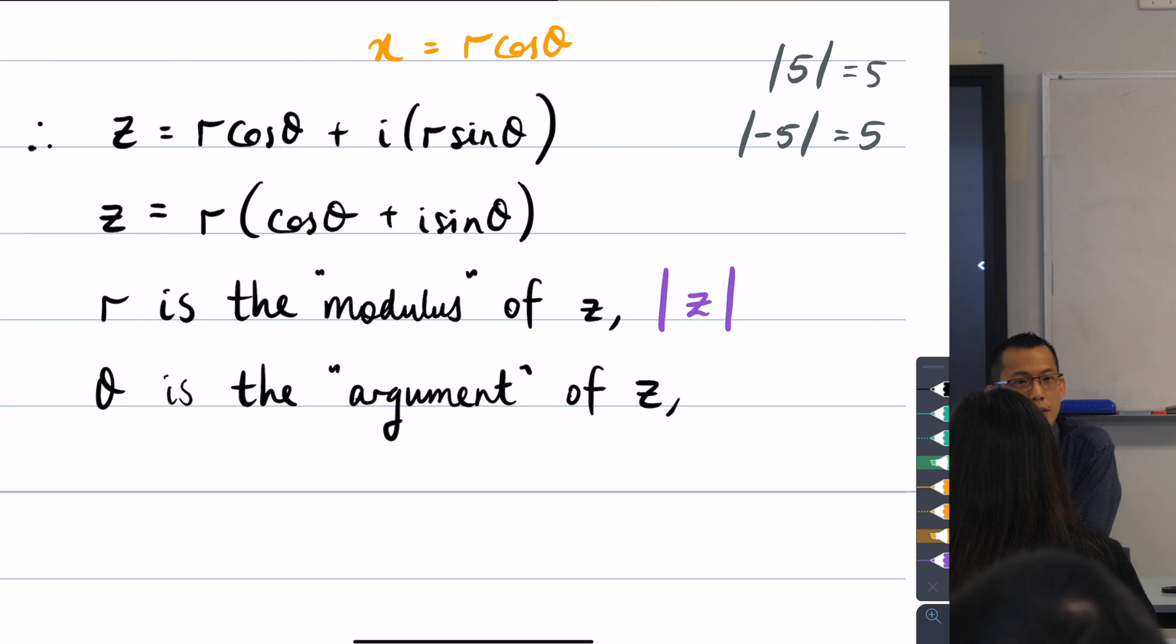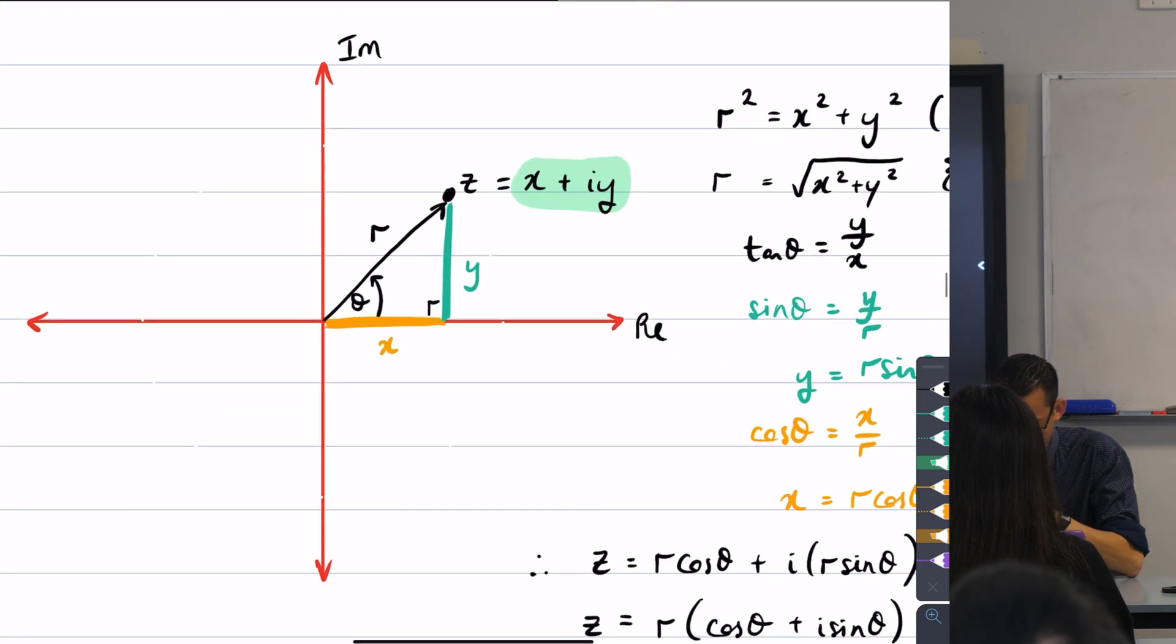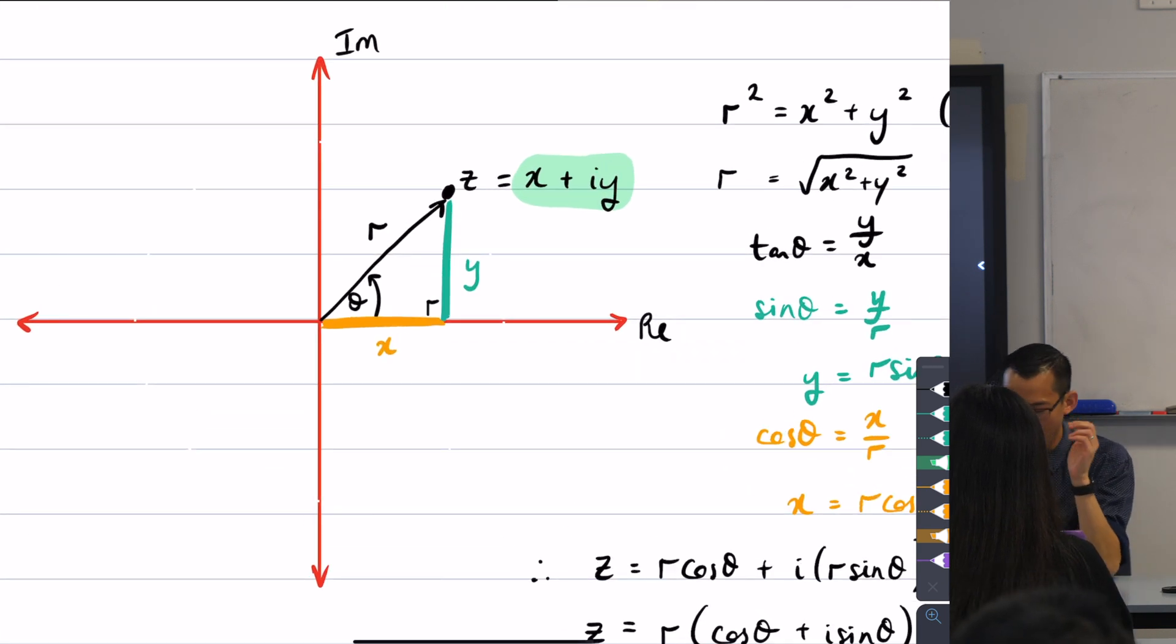And maybe you're just thinking, I'm just taking the positive value. But can you see, this actually fits this definition here, right? 5 and negative 5 are places on the complex plane. Where are they? 5 and negative 5, where are they? Maybe 5 is around here.